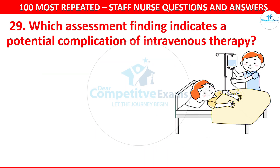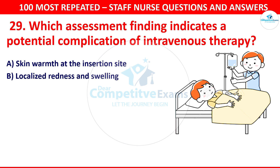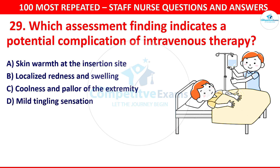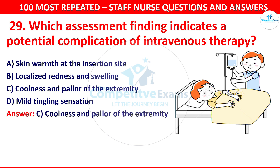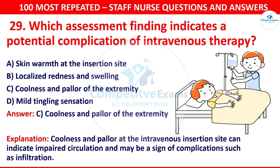Question number 29: Which assessment finding indicates a potential complication of intravenous therapy? The correct answer is coolness and pallor at the intravenous insertion site, which can indicate impaired circulation and may be a sign of complications such as infiltration.